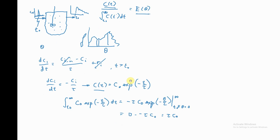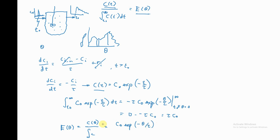Now we can find E(θ). We have E(θ) = C(θ) divided by the integral of C. The numerator C(θ) = C-naught·exp(−θ/τ), and the denominator is τ·C-naught. The C-naught terms cancel, leaving E(θ) = (1/τ)·exp(−θ/τ).